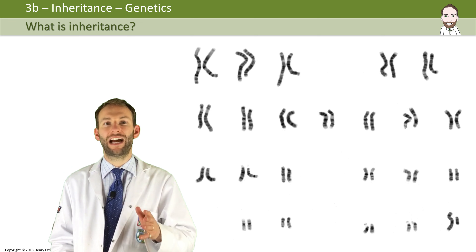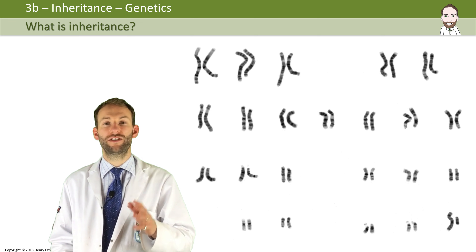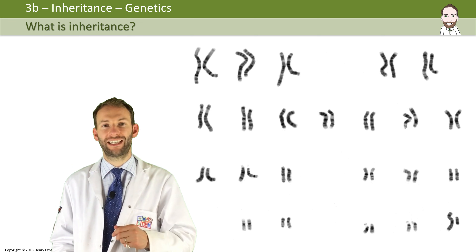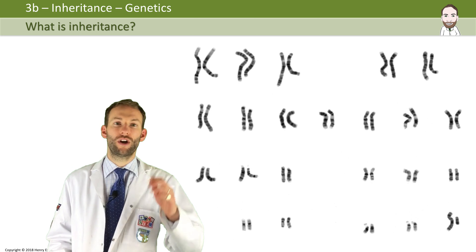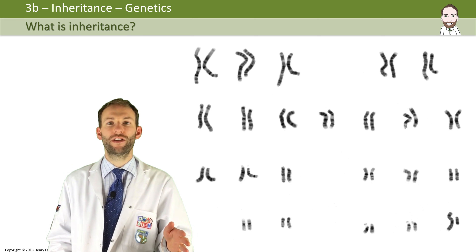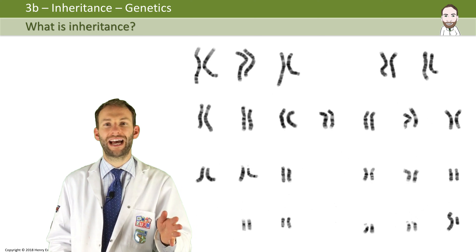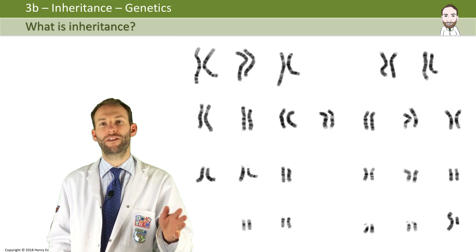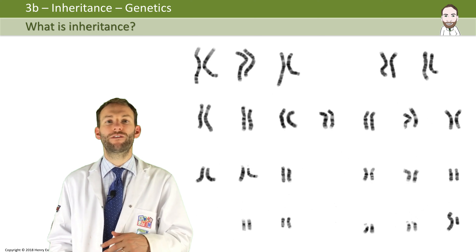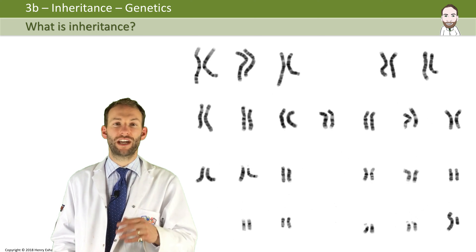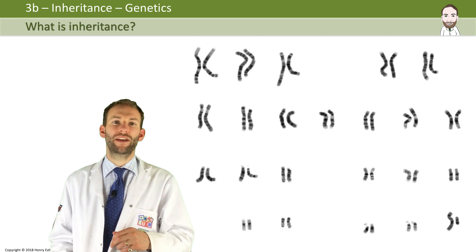Therefore, you actually have two versions of every single gene — one copy from your mother on one half of the pair, and one from your father on the other half of the pair.